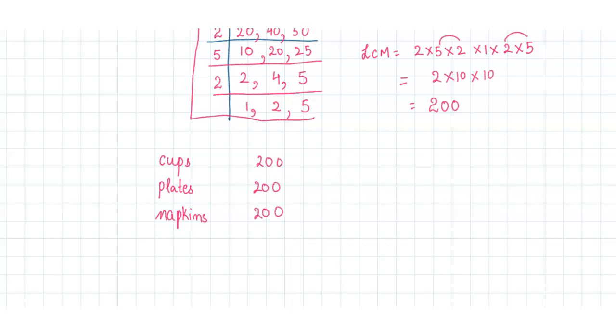200. But cups come in packages of 20, so how many packages? 200 divided by 20, that is 10. And plates come in packages of 40, so these will be 5 in number. And napkins come in packages of 50, so these will be 4 in number. So this is the answer.